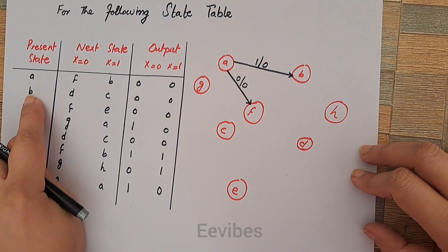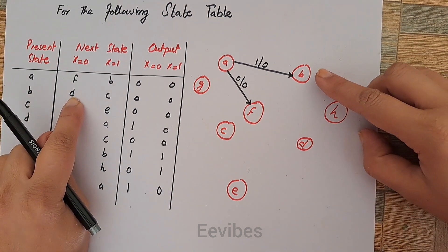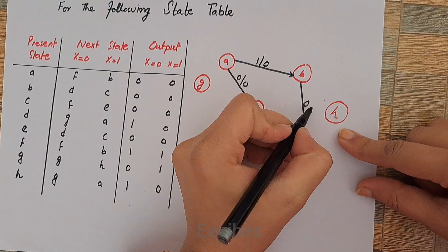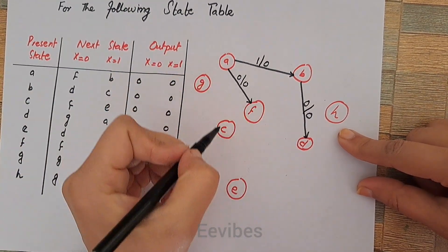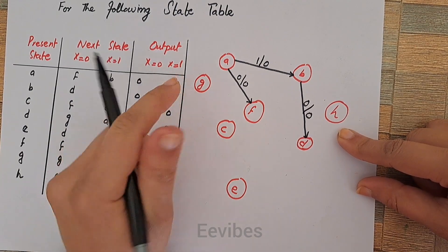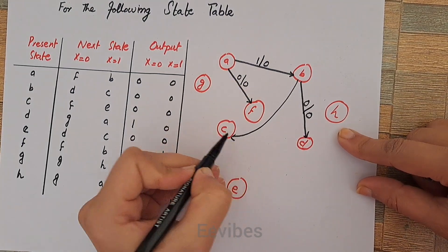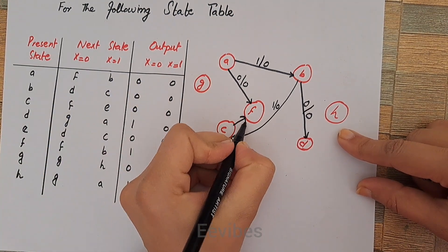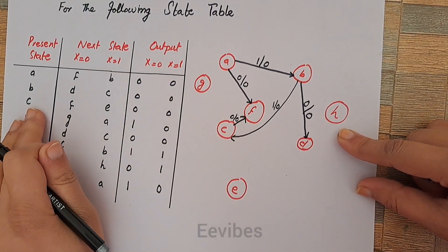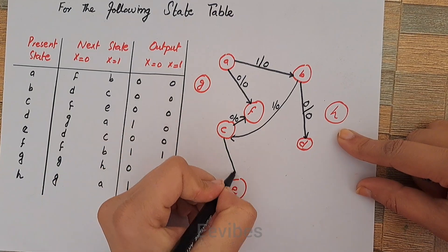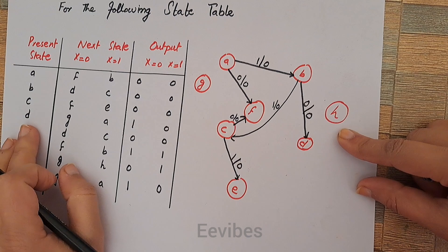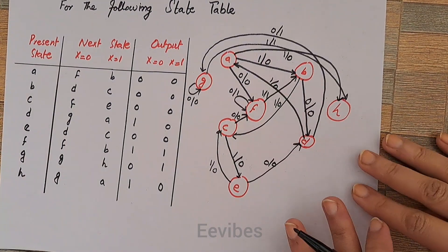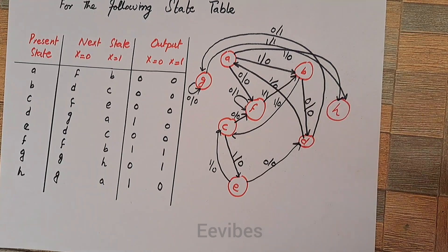Moving to present state B: from B you go into D when input is 0, output is also 0. From B you go into C when input is 1, output is 0. From C, we go into F when input is 0 and output is 0. From C, we go into E when input is 1 but output is 0. Similarly, we continue drawing the state diagram for all the remaining present states, taking the same approach as described.